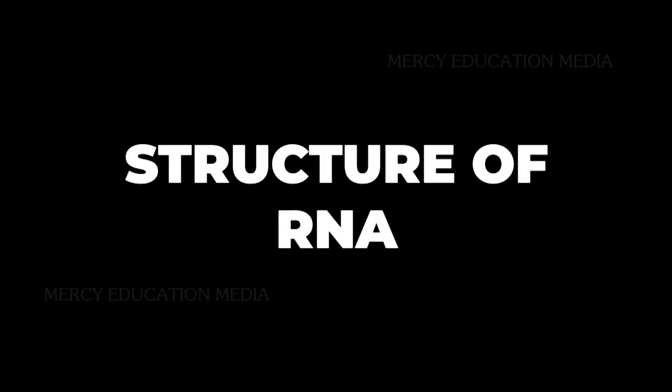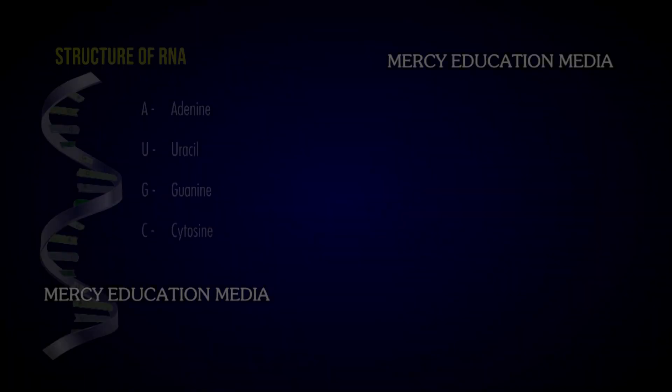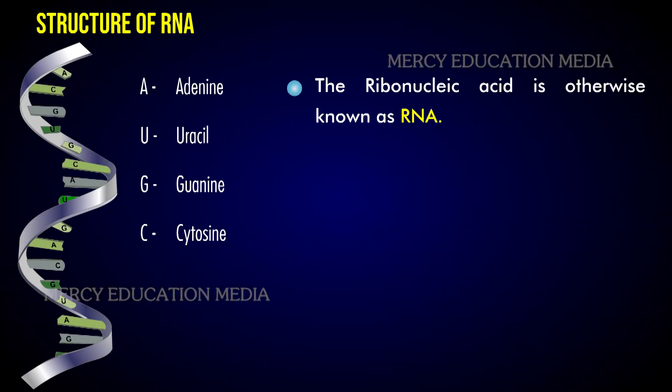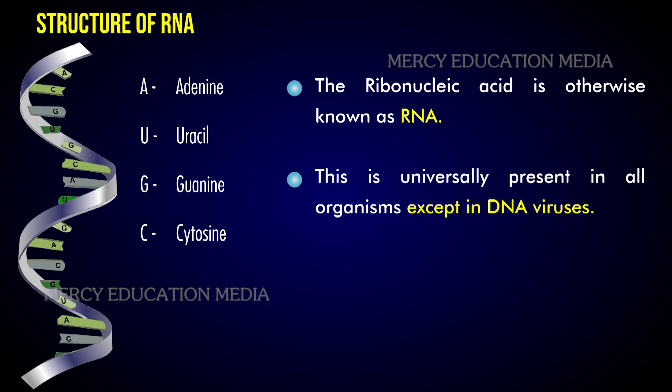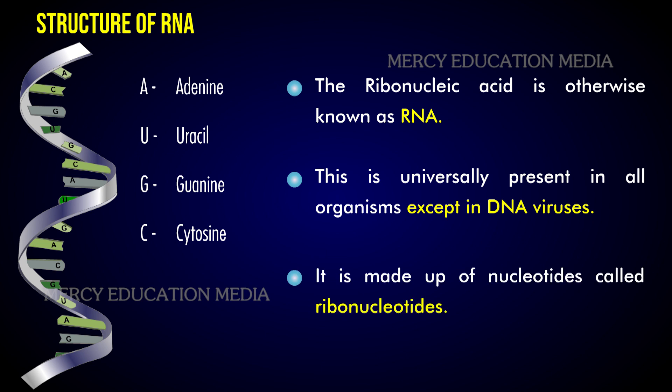Discuss the structure of RNA and its types. The ribonucleic acid is otherwise known as RNA. It is universally present in all organisms except in DNA viruses, and it is made up of nucleotides called ribonucleotides.